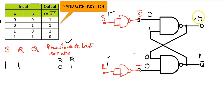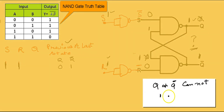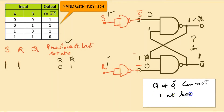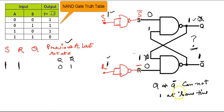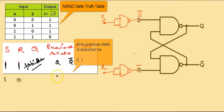Looking at the truth table of the NAND gate: if Q = 0 and Q complement = 1, input 0,1 gives 1, and 1,0 also gives 1. Both Q and Q complement come out as 1, which is not possible because Q complement is the complement of Q — they cannot both be 1 at the same time. So this is the forbidden state for the NAND-based SR latch.